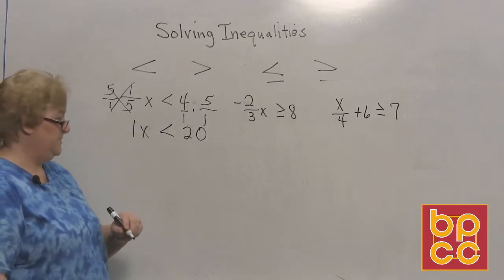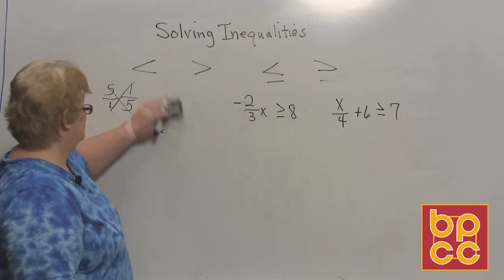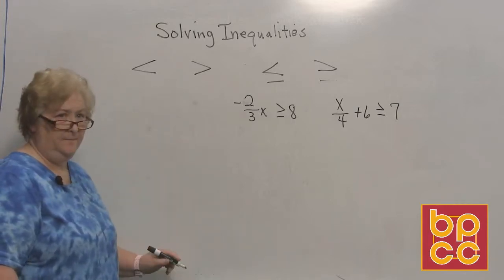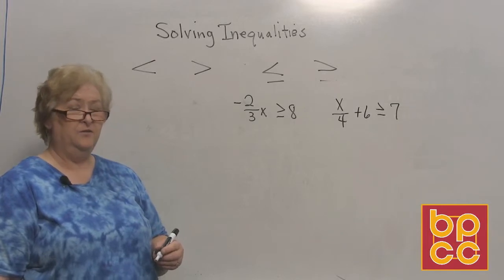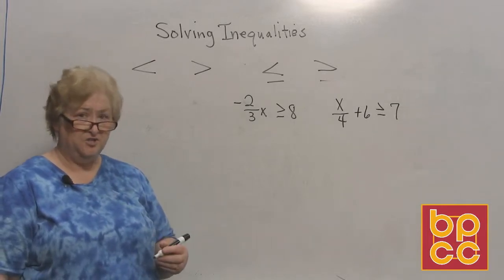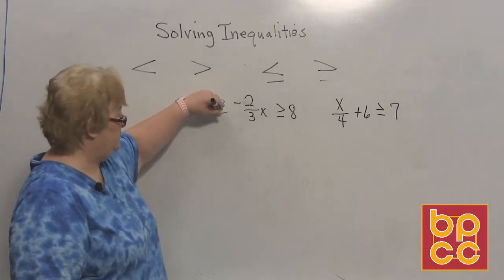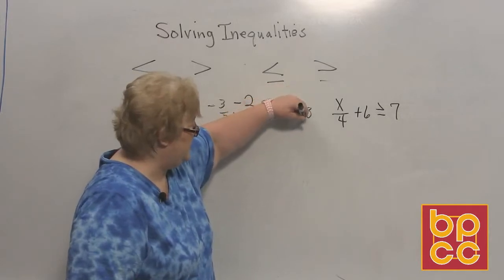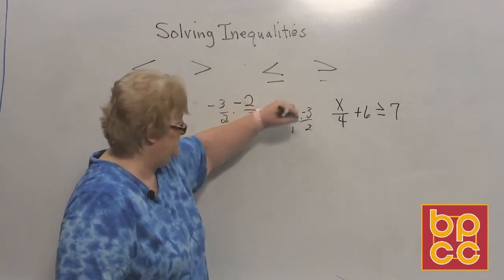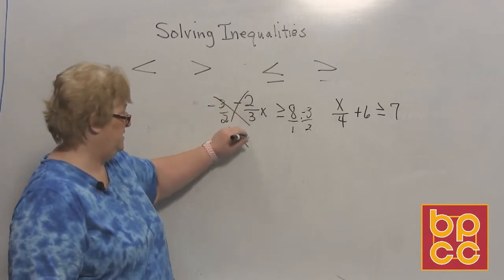On this one, we have a negative two-thirds x is greater than or equal to 8. Now I'm going to have to multiply by the reciprocal, and the reciprocal doesn't change the sign, it just flips. So I'm going to multiply by a negative 3 over 2, and over here, a negative 3 over 2. This will now turn into a positive 1x.